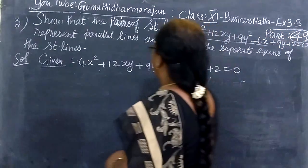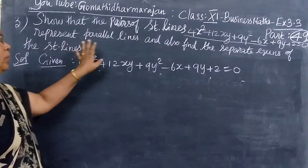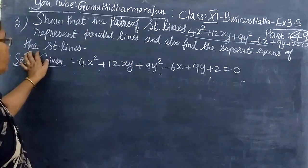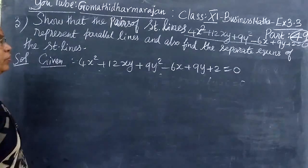We are given a pair of straight lines. We want to prove the pair relation and also find the separate equations of the straight lines.